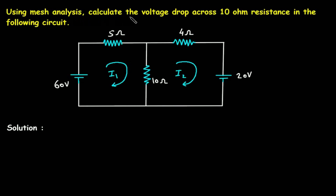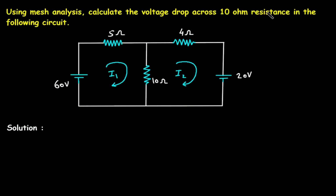Using mesh analysis, calculate the voltage drop across the 10 ohm resistance in the following circuit. We have to find the voltage drop across this 10 ohm resistance using mesh analysis. To find the voltage drop, we first have to find the current through this 10 ohm resistance.